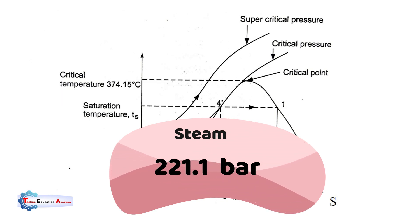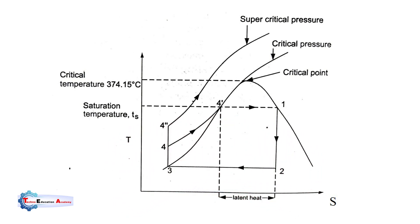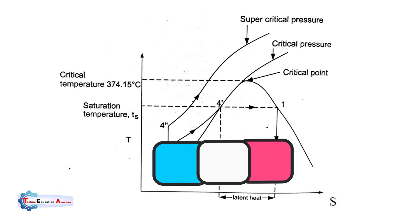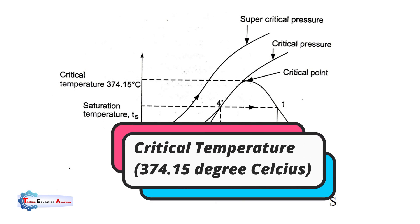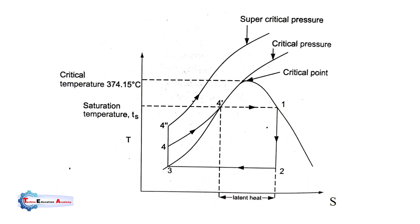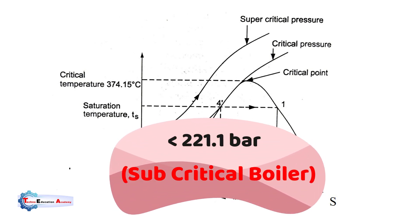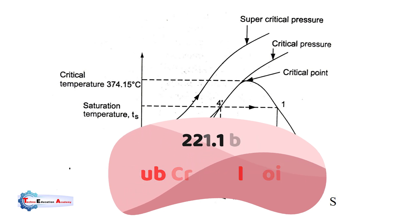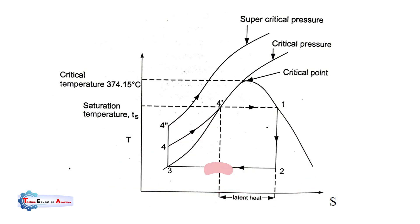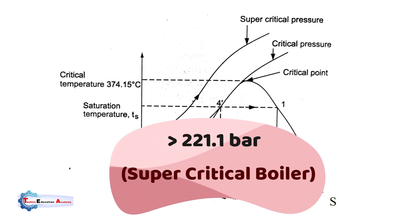For steam, critical pressure is about 221.1 bar and critical temperature is 374.15 degrees Celsius, as also represented on the T-S diagram. Boilers in which steam is produced below 221.1 bar are known as subcritical boilers, and boilers in which steam is produced above 221.1 bar are known as supercritical boilers.